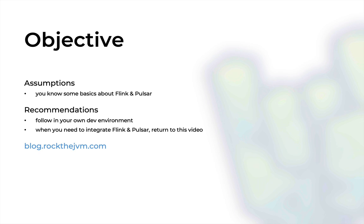I'm going to show you a git repository which you can replicate locally, and I'm going to walk you through every single bit in that repository. I recommend you follow along in your own dev environment — I'll give you all the coordinates necessary. Whenever you need to integrate Flink and Pulsar for your own project, just refer back to the video or to the written form at the blog, which also contains more detailed instructions.